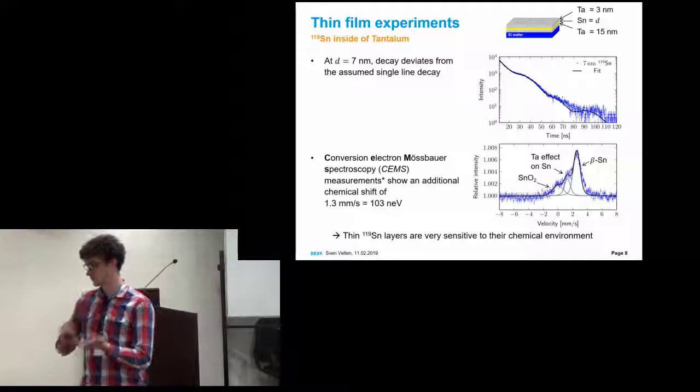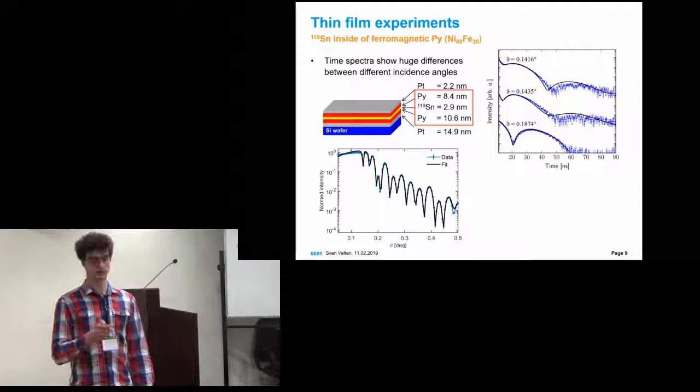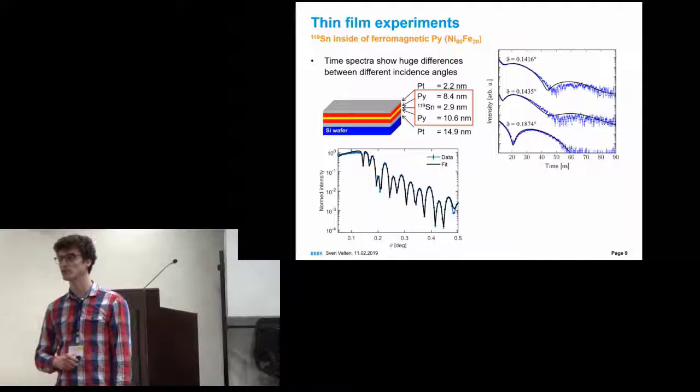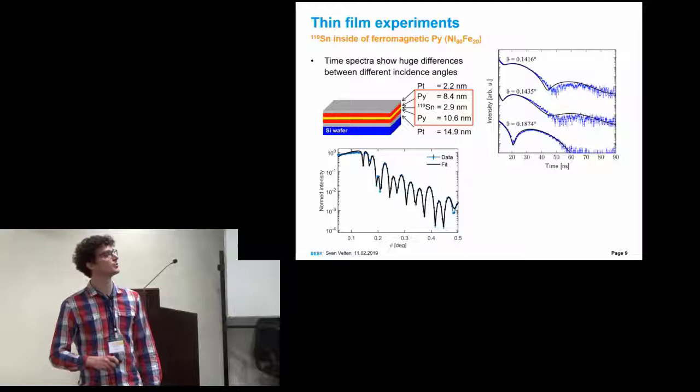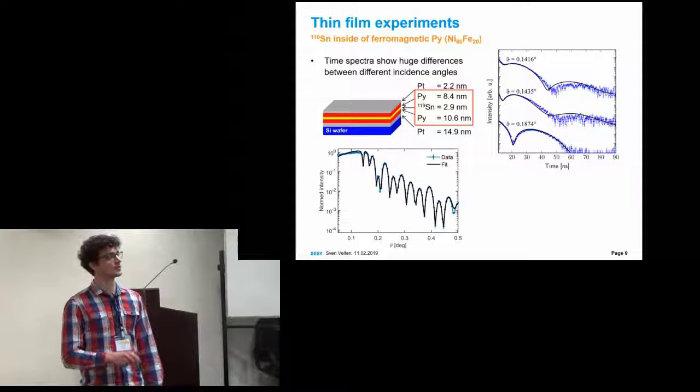The next step we wanted to do is to embed this inside of a ferromagnetic material. We chose permalloy, a nickel-iron alloy. We made a very thin tin layer of 2.9 nanometers. The spectrum shows clearly that we don't have a single transition anymore. We have clearly a line splitting.